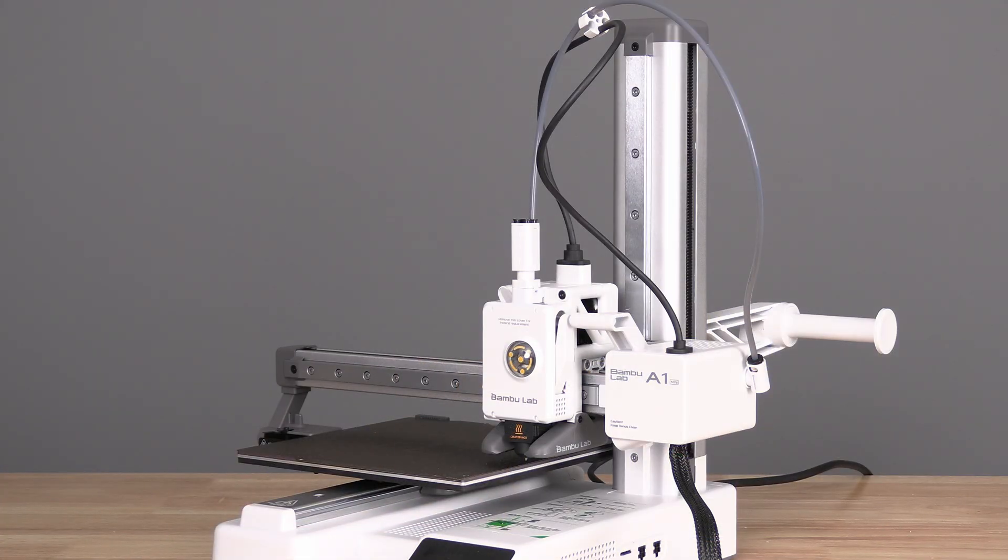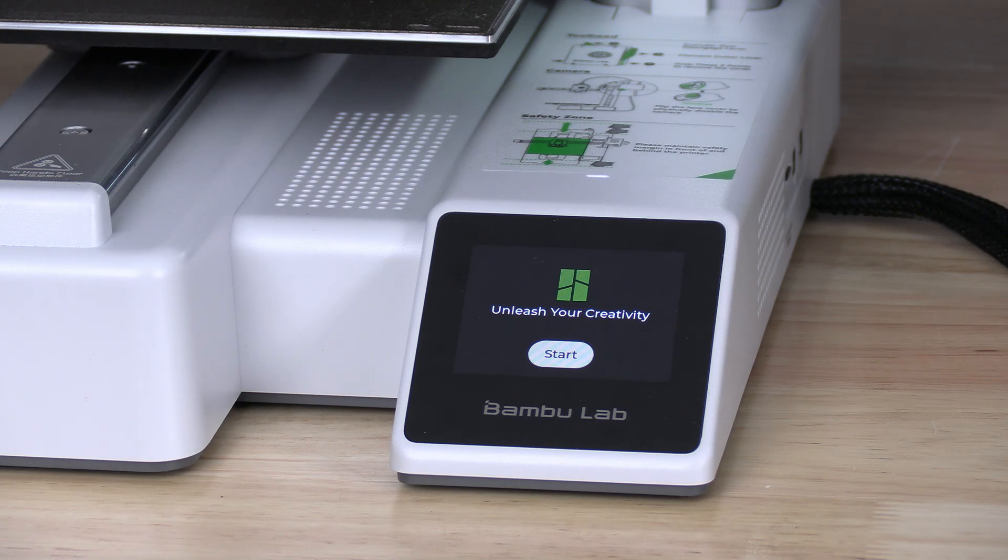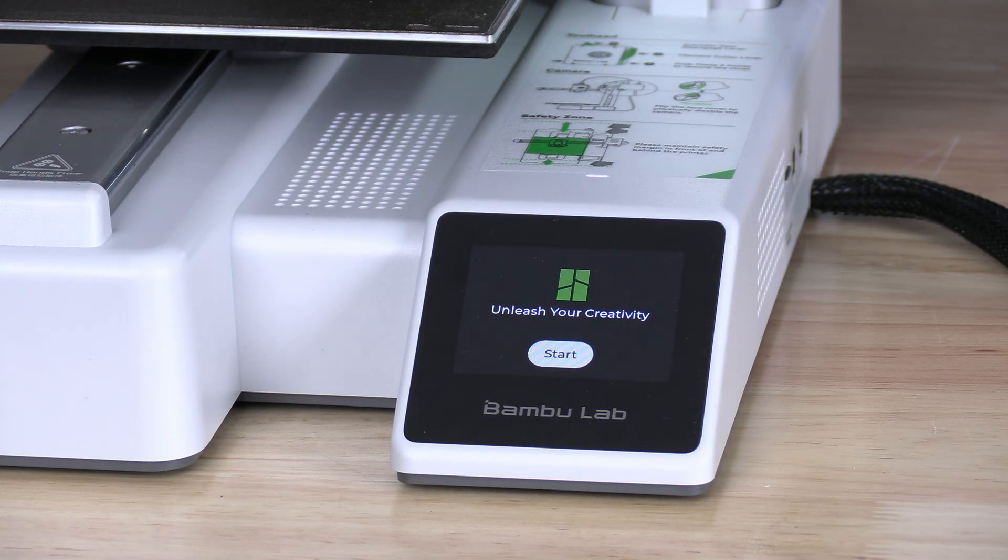Turn your printer on. You will need to download Bambu Handy from your phone's app store. With Handy installed, create a Bambu account. You will use this account to log in to Bambu Handy and Bambu Studio on your computer. Please download Bambu Studio, install that, and log in to that on your computer as well. Now, with both of these things installed and your account logged in, press Start.